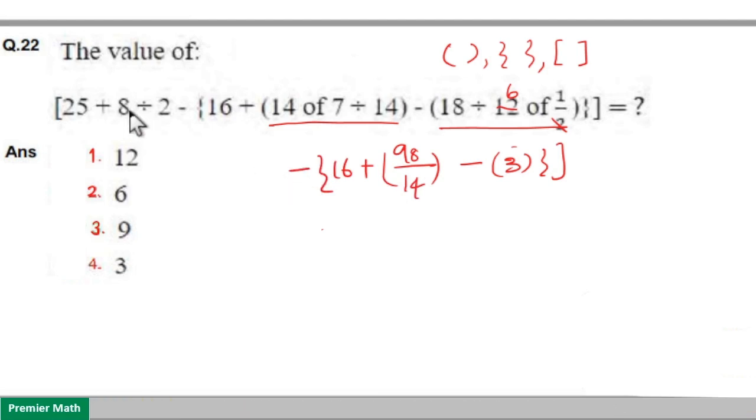Here 8 by 2 is equal to 4, remaining 25. Now you can see we have solved this. Here as per this, you have to solve this bracket.